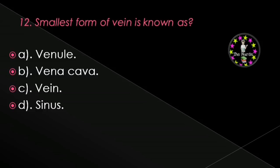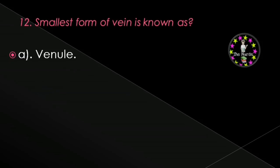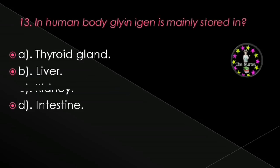Next question: Smallest form of vein is known as — venule, vena cava, vein, or sinus? Correct answer is venule.